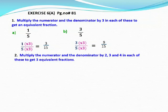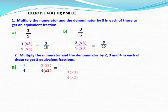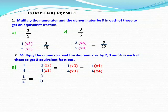Now see the next question: multiply the numerator and denominator by 2, 3 and 4 in each of these to get 3 equivalent fractions. First question is 1 by 4. Multiply numerator and denominator by 2: 1 times 2 is 2, 4 times 2 is 8, giving 2 by 8. Next, multiply by 3: 1 times 3 is 3, 4 times 3 is 12, giving 3 by 12. Next, multiply by 4: 1 times 4 is 4, 4 times 4 is 16, giving 4 by 16. So 2 by 8, 3 by 12, and 4 by 16 are equivalent fractions of 1 by 4.